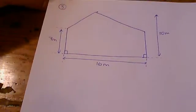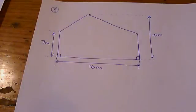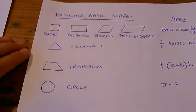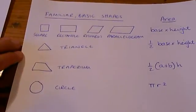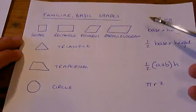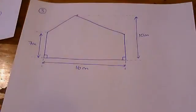Okay, last one I'm going to show you. Looks a little bit like a side view of a house. And again, this is a compound shape. Remember, it's not on the list of familiar basic shapes, the ones that we know the formula for. So we can't use a single formula for this shape because it's not one of these. It's not a square, rectangle, rhombus, or parallelogram. It's not a triangle. It's not a trapezium. It's not a circle. It's something else.